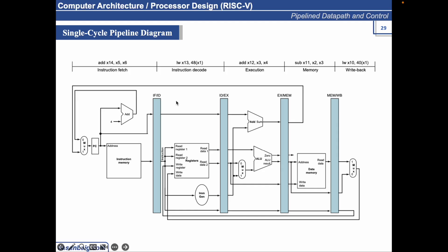This is the pipeline diagram, and you can see how instructions are executed. The first instruction moves forward from stage by stage until it reaches its last stage. Once this instruction is in this phase, the next instruction is in its previous stage, and so on and so forth.